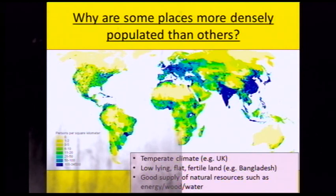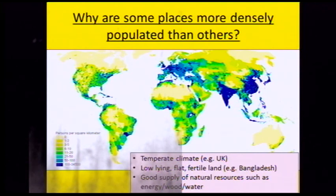If land is flat, it's going to be much easier to build on so people can build settlements. If it's fertile land, it's much better for growing crops. The example on this map is Bangladesh. Additionally, a good supply of natural resources such as coal, oil, wood and water is going to be another reason why people want to live in a particular area.